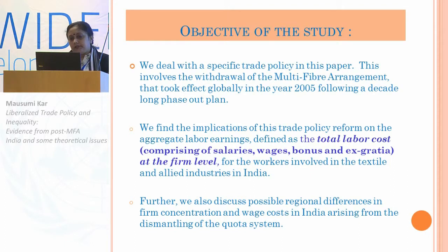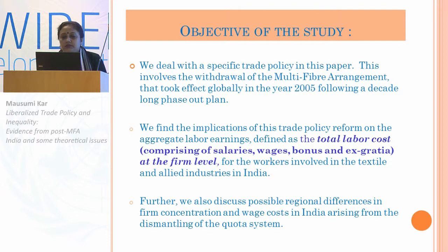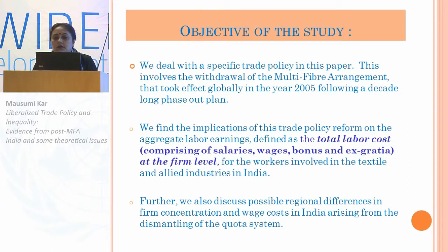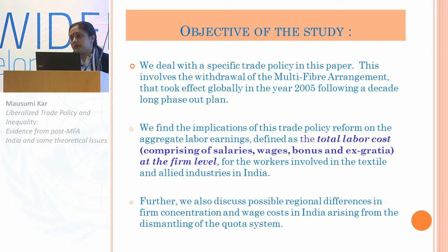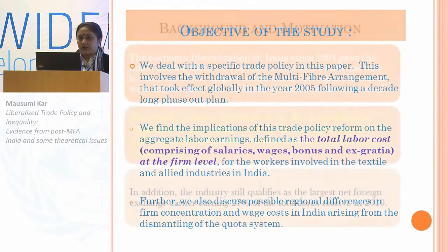We find the implications of this trade policy reform on the aggregate labor earnings, where aggregate labor earning is defined as total labor cost. It comprises salaries, wages, bonus, etc. at the firm level for workers involved in textile and allied industries. We also discuss the possible regional differences in firm concentration and wage cost arising from the dismantling of such MFA quotas.